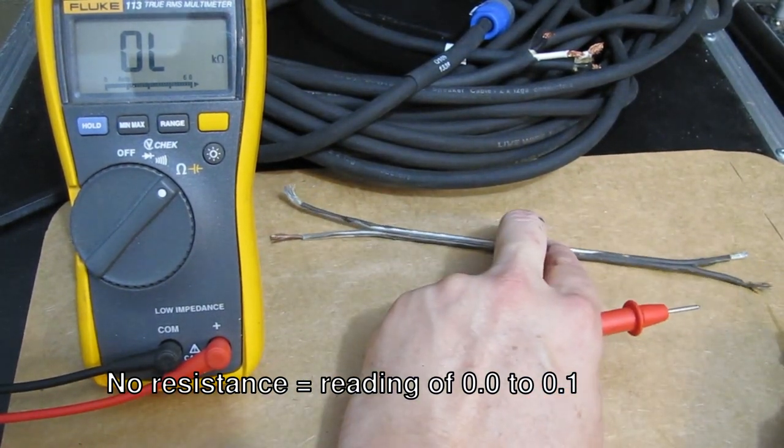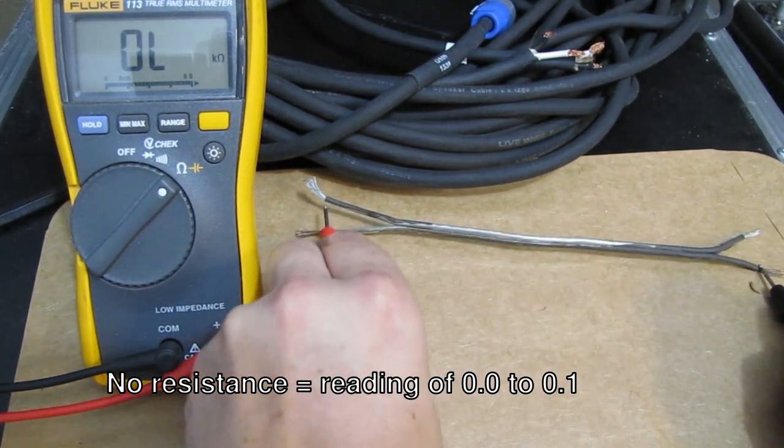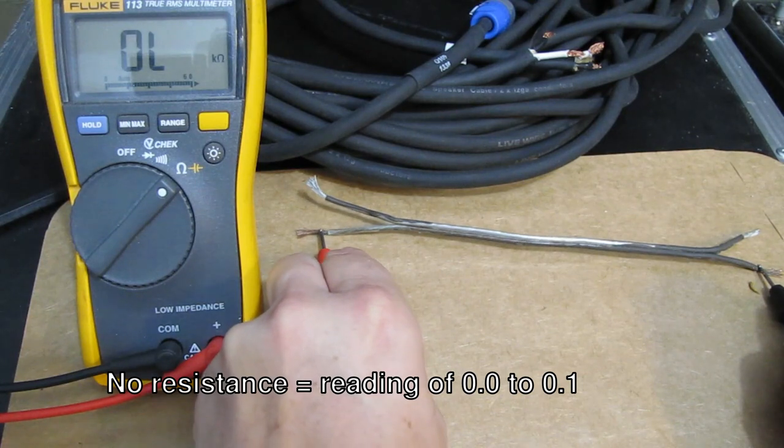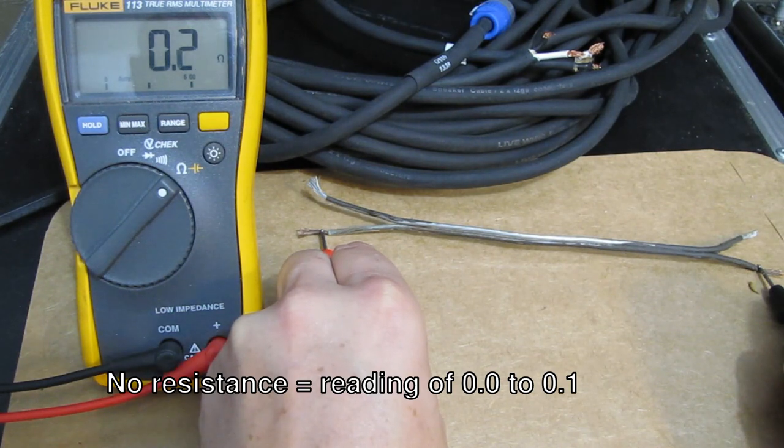All right, let's take a look at this one. Now this is the one that has oxidation on it. Just take a look here. Okay, as you can tell, it's got a bit more resistance to it.